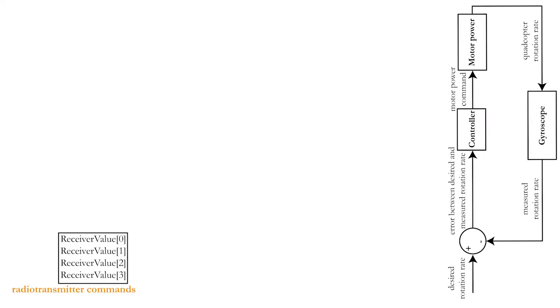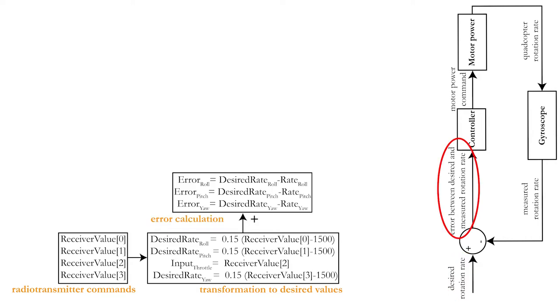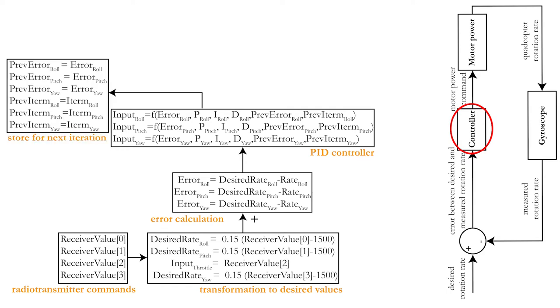First, your microcontroller will receive the four commands from the radio transmitter sticks. These will be transformed to the desired rotation rates and the throttle input. Now calculate the error between the desired rotation rates and the actual rotation rates that were measured by the gyroscope. These errors are subsequently used in the equations that form your PID controller. In this step, you should not forget to store the errors for calculation in the next iteration.